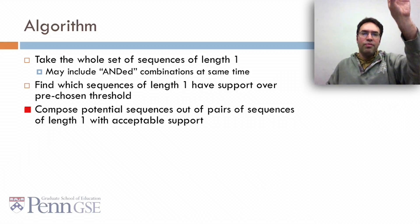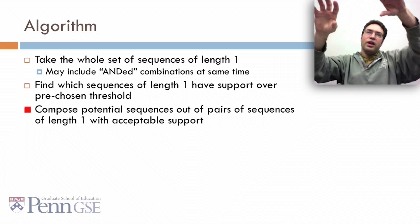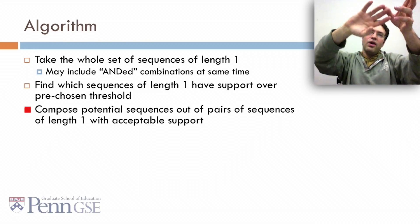Then we compose potential sequences out of pairs of sequences of length one with acceptable support. For example, if both AB and CD have acceptable support, then we can look at if AB now, CD later, and if CD now, AB later.